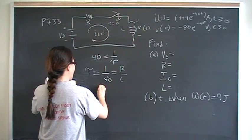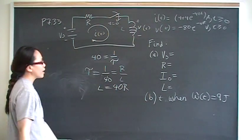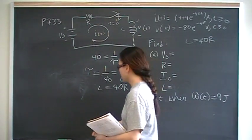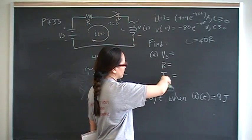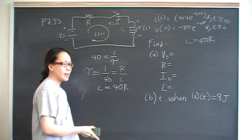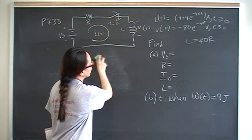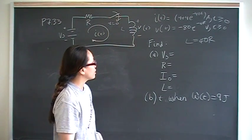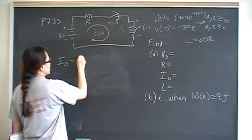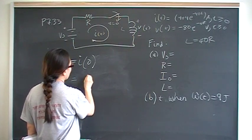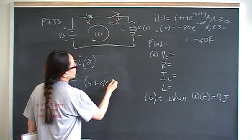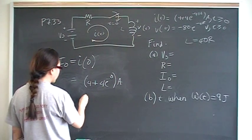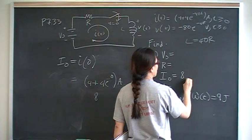The initial current is straightforward — it's just I(0), the current evaluated at time zero. That gives us 4 plus 4e raised to the 0, which equals 4 plus 4 times 1, since e to the 0 is 1. So that gives me 8 amps. We have 8 amps initially stored in the inductor.